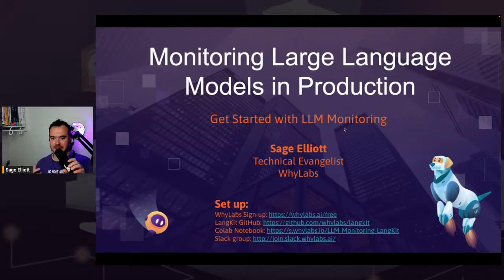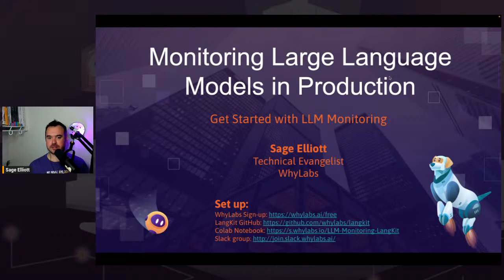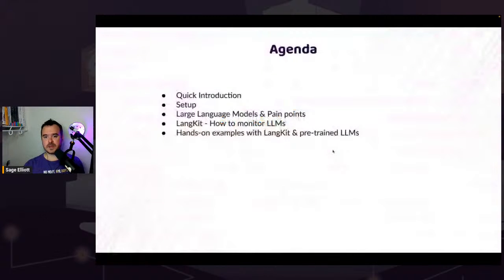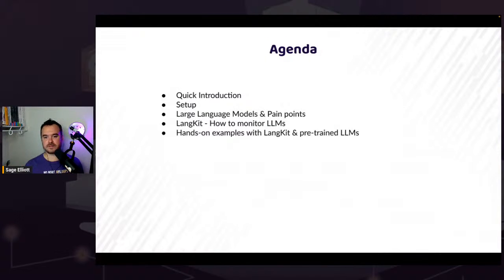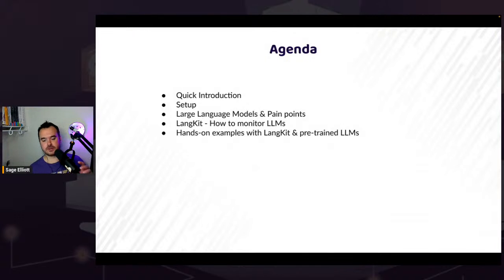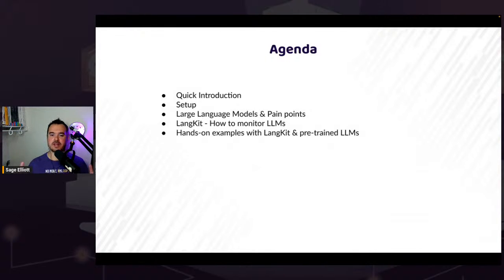Again, I apologize if it sounds weird because I think I woke up with a cold this morning. So this is an intro to monitoring large language models in production, and we're going to be talking about some of the pain points we might experience when we put a large language model out. Quick agenda: we're going to do a quick introduction, then setup again for people who just joined, then we'll talk about LLM pain points, how Langkit can help solve these, and then we'll mostly be going through a hands-on example.